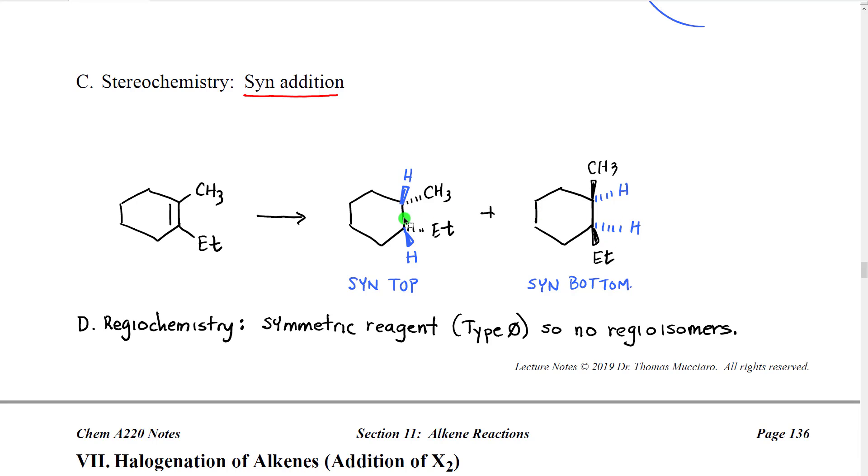Because we are creating chirality centers in these molecules, these would be mirror images of each other, as long as there is no other already existing chirality center. With regard to regiochemistry as I mentioned previously, because this is a symmetric reagent, there are no regioisomers produced.